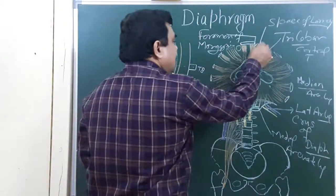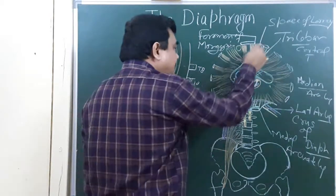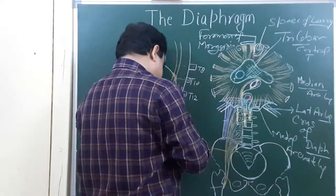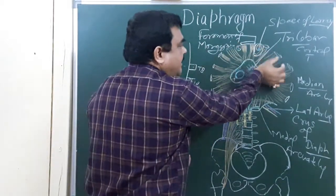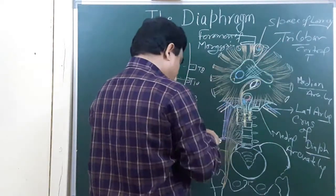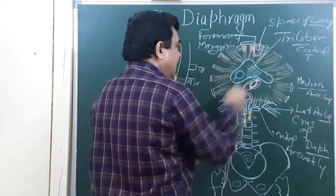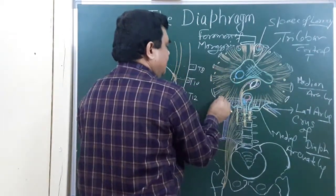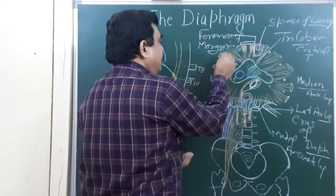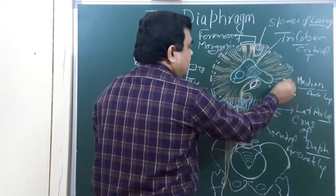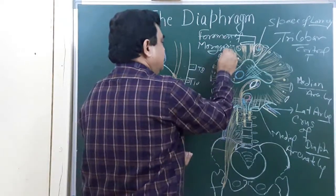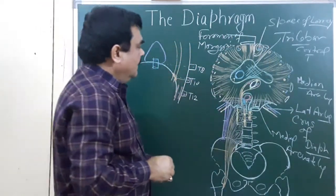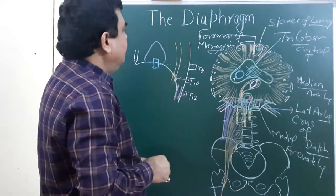This space contains the superior epigastric artery and superior epigastric vein. Here are also intercostal spaces through which intercostal nerves and vessels pass — these are the intercostal nerves and intercostal vessels of the particular spaces.